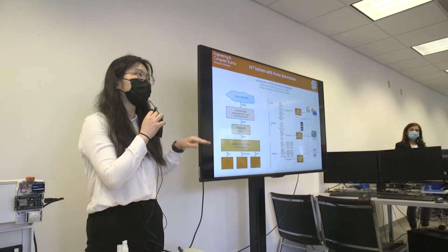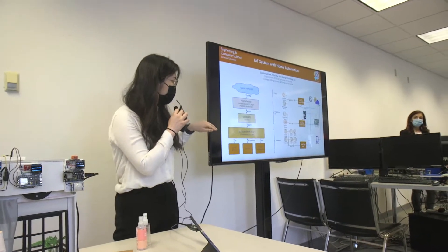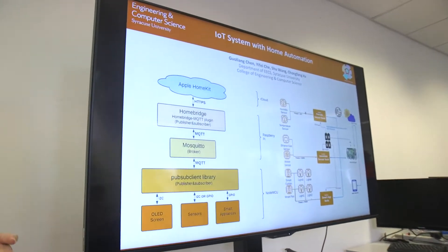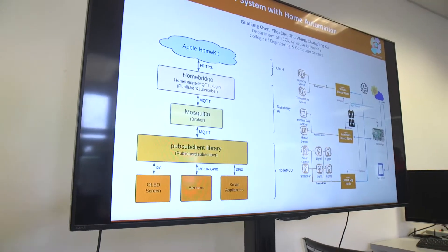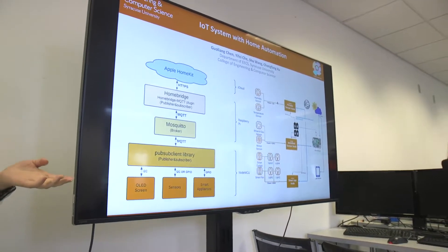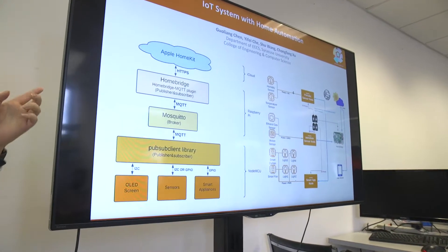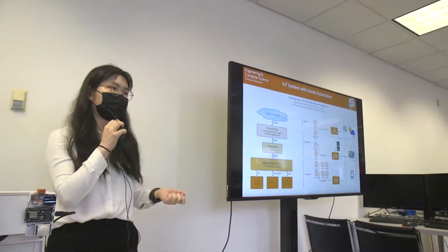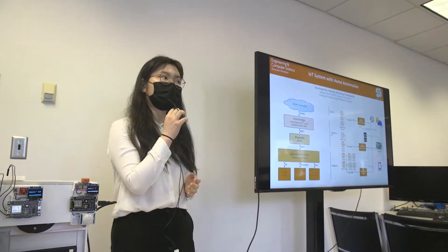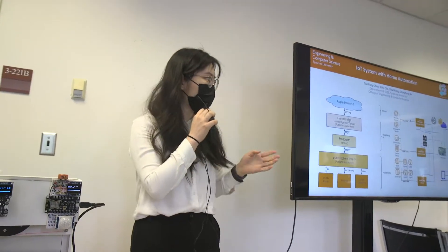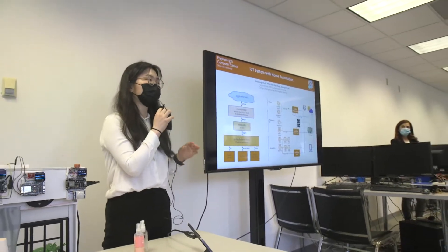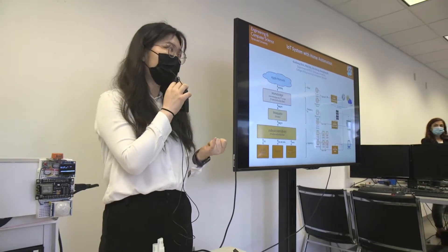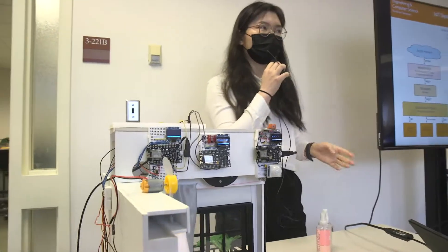The message from this library will be sent to the broker running on our Raspberry Pi, which is Eclipse Mosquitto. The broker will send a message to Homebridge, which is the communication system in our IoT design, and Homebridge serves as an interface to communicate with Apple HomeKit so users can directly access the data. We also use many libraries to support our OLED screens, smart applications, and sensors.